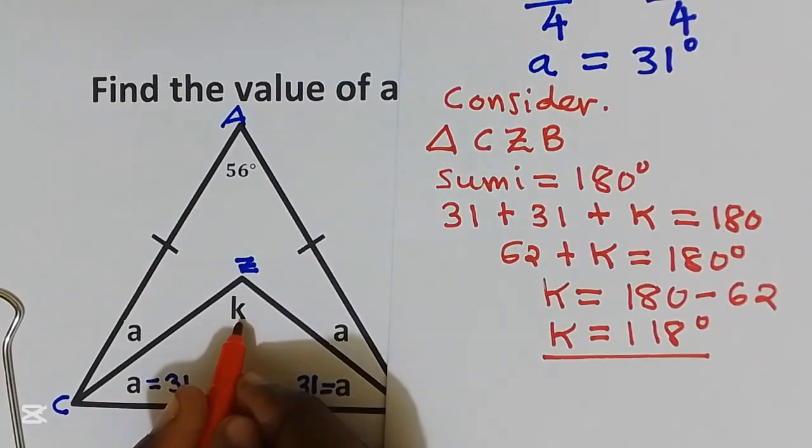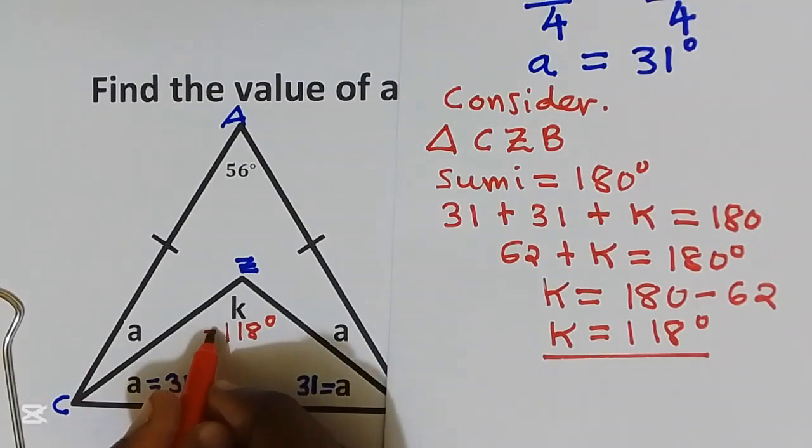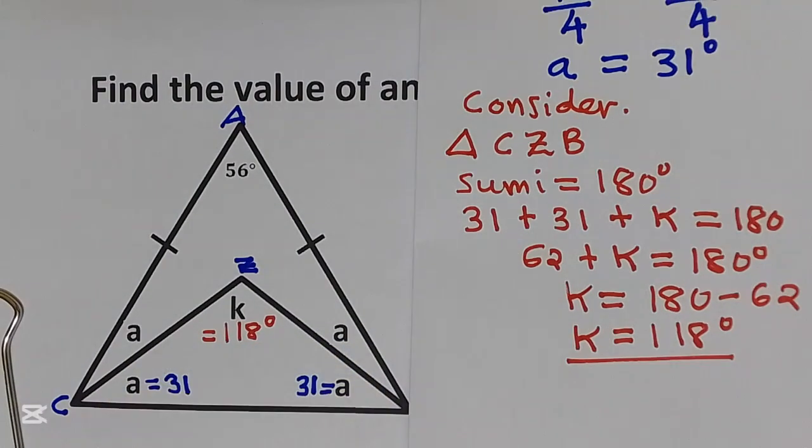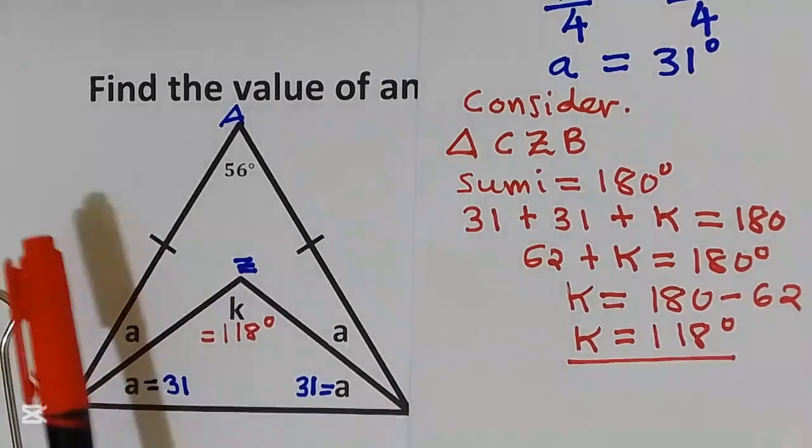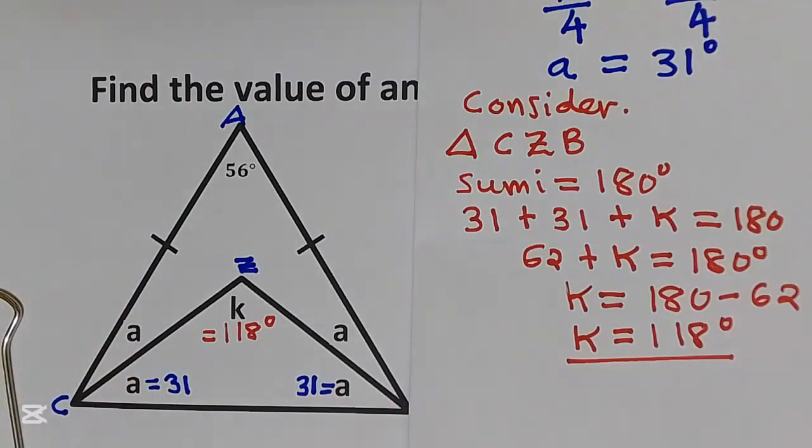The value of k is equal to 118 degrees. I hope you understand this question. For more questions on geometry, you can check my playlist. Thank you very much for listening. Don't forget to subscribe, share and comment to this video. See you next time, bye bye.